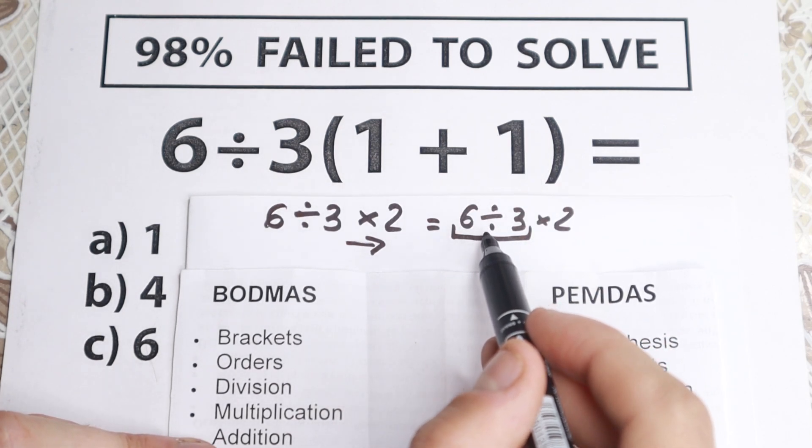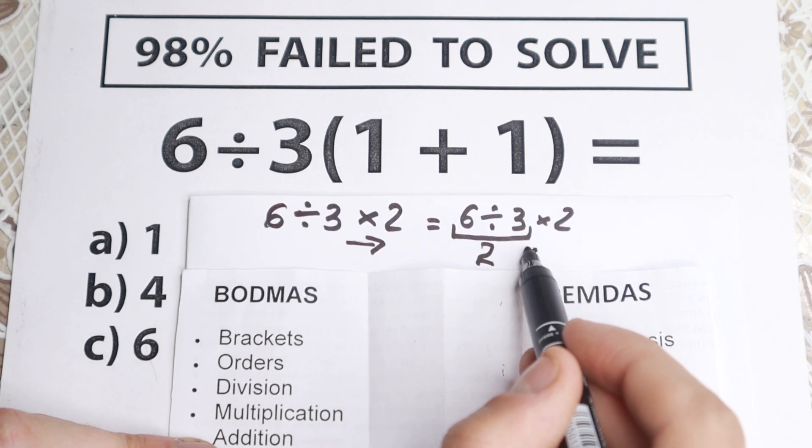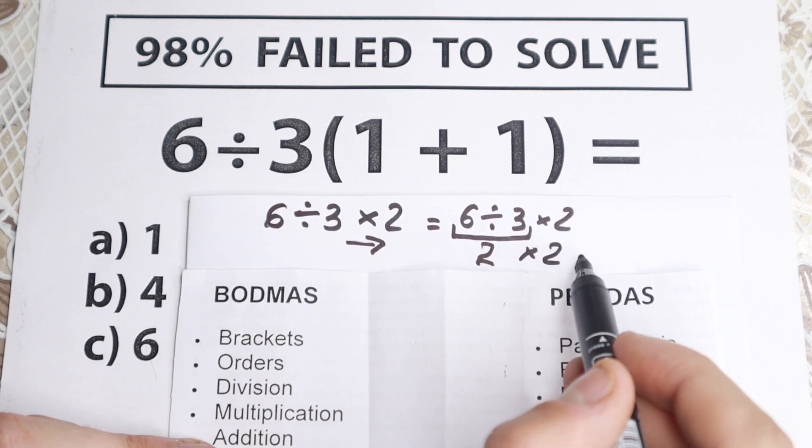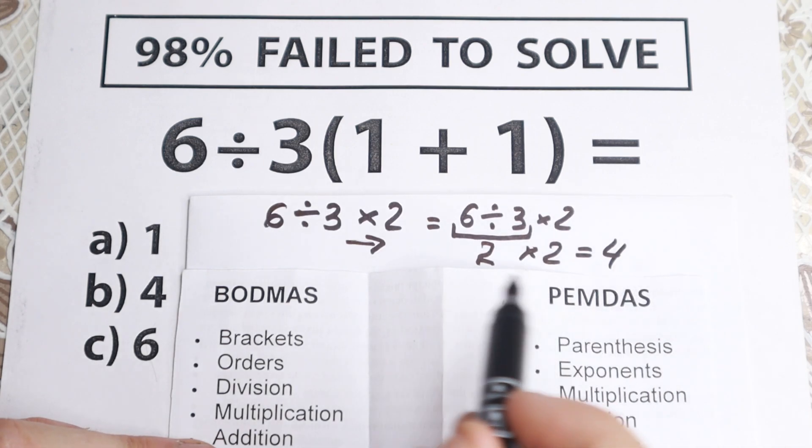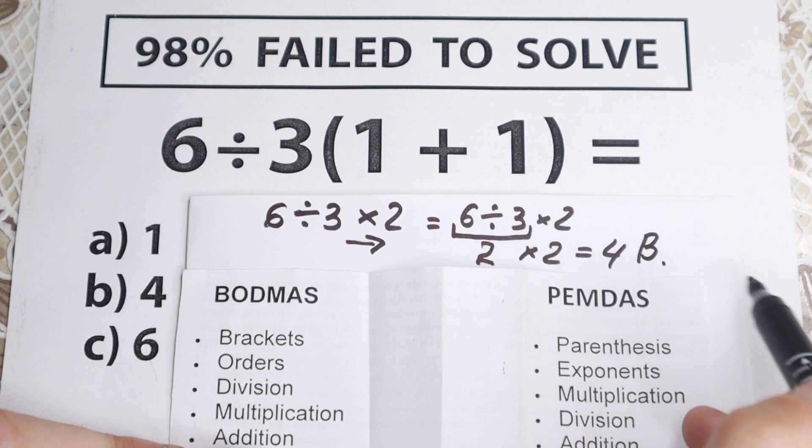So we have division: 6 divided by 3 equals 2. And then 2 times 2 equals 4. And this is the correct answer to this problem using PEMDAS order. Option B.